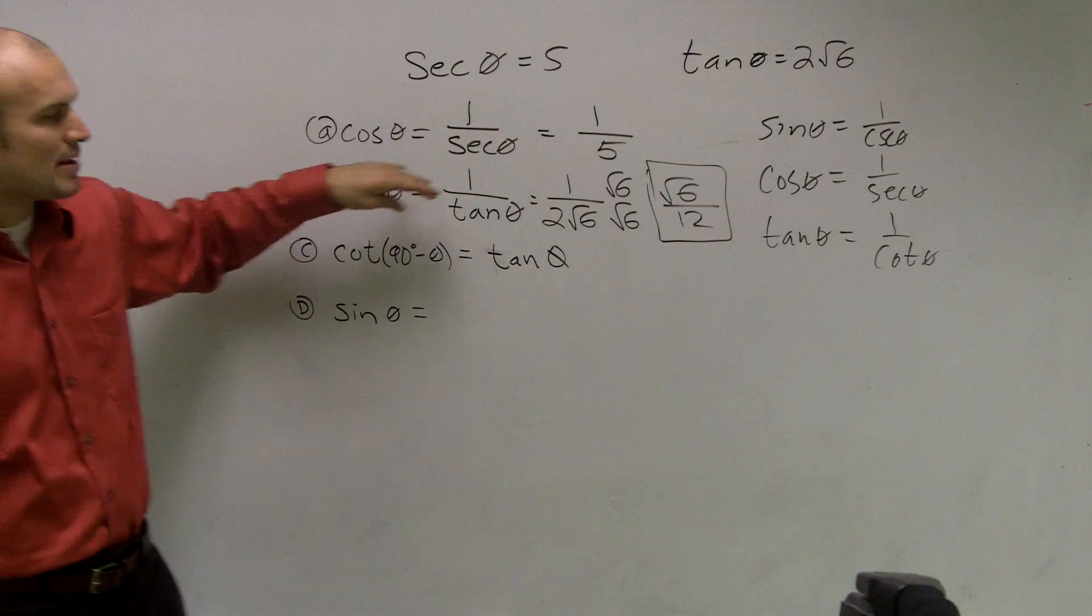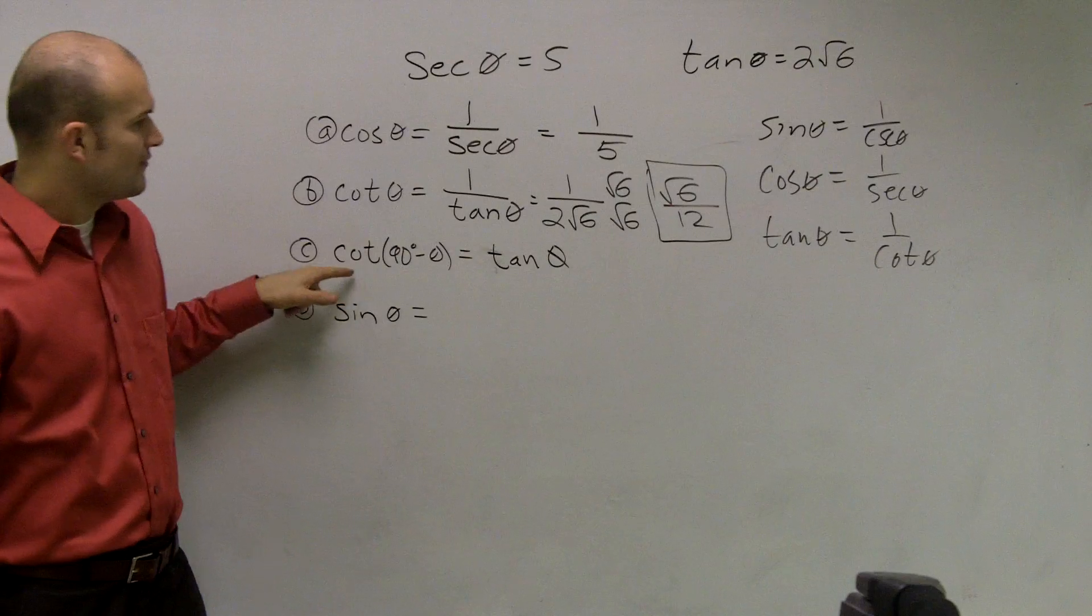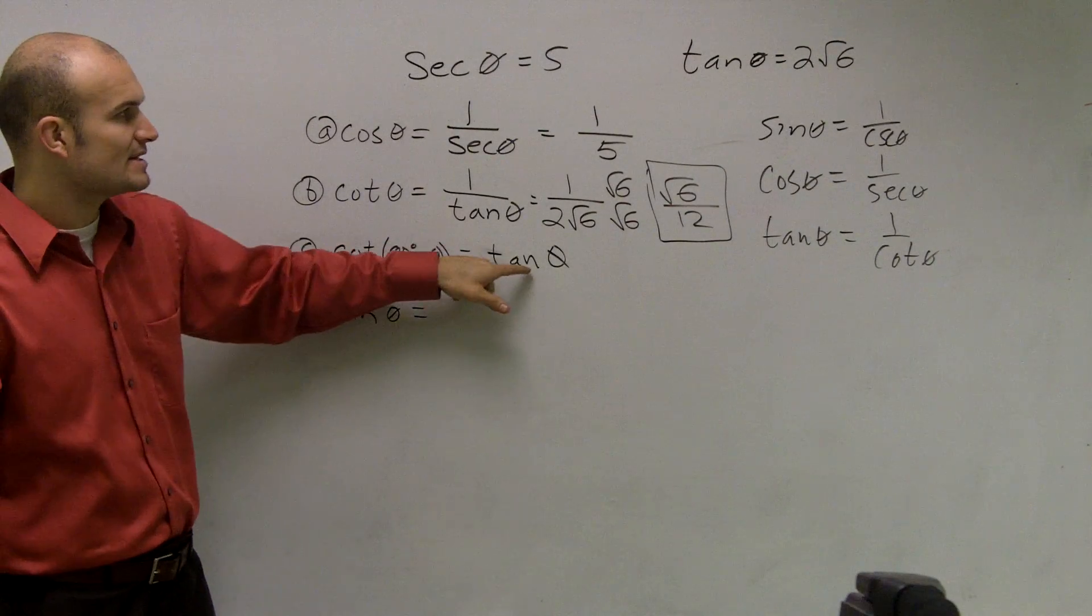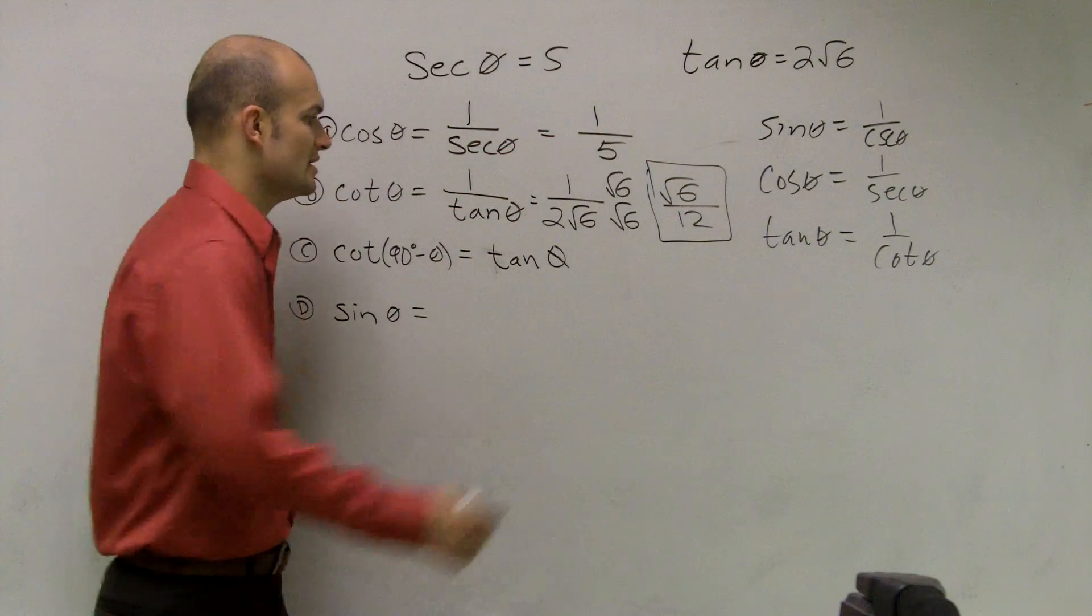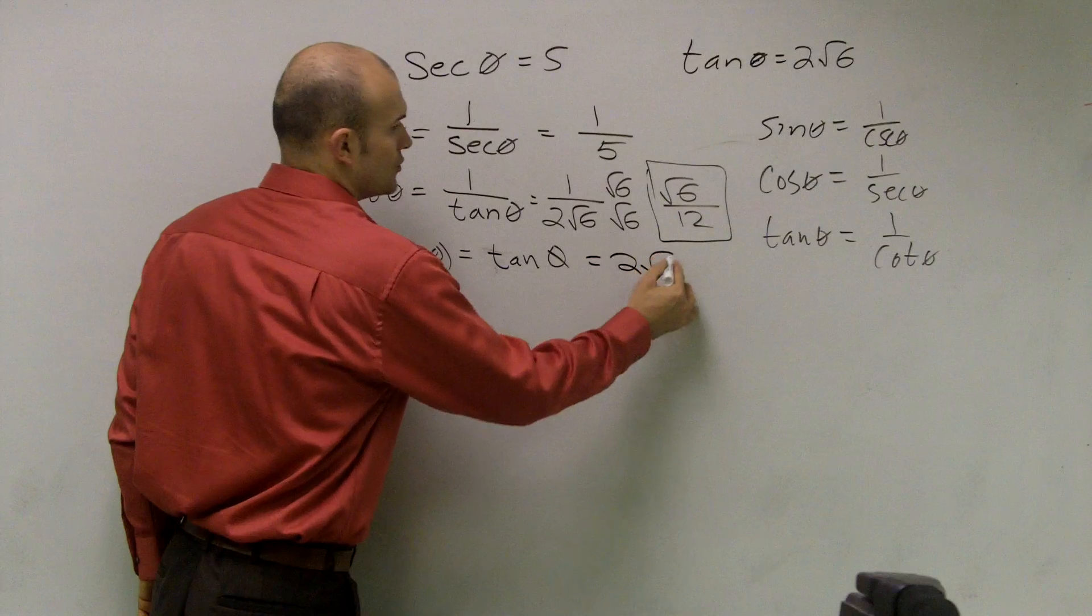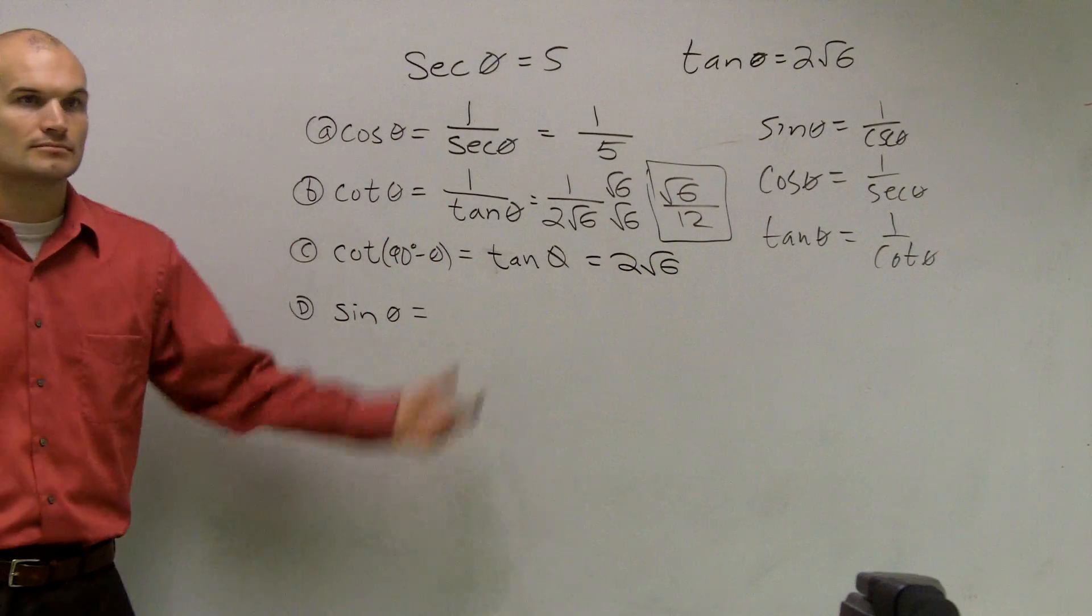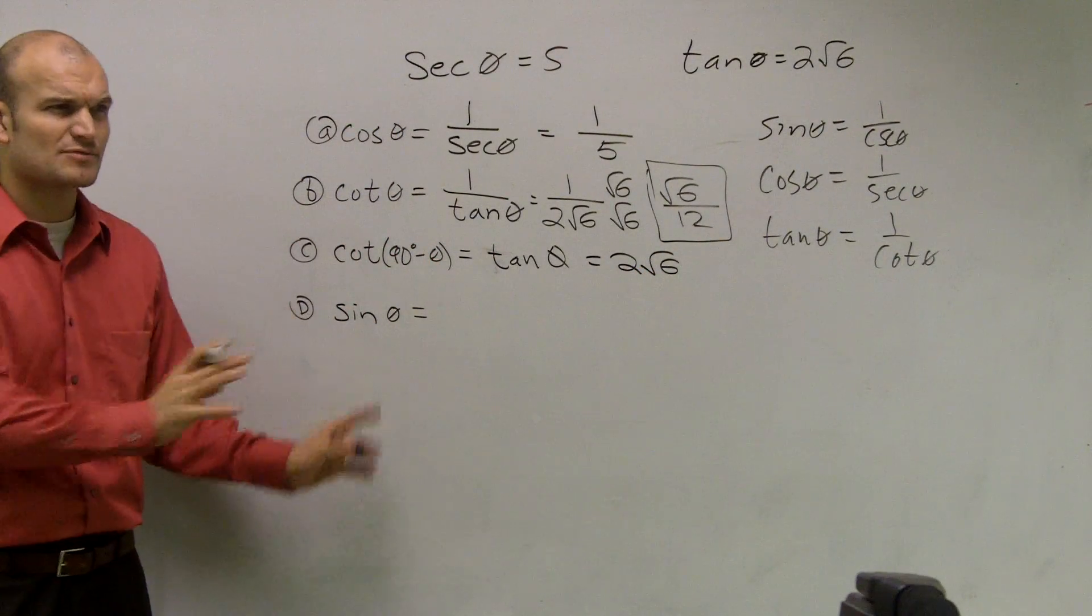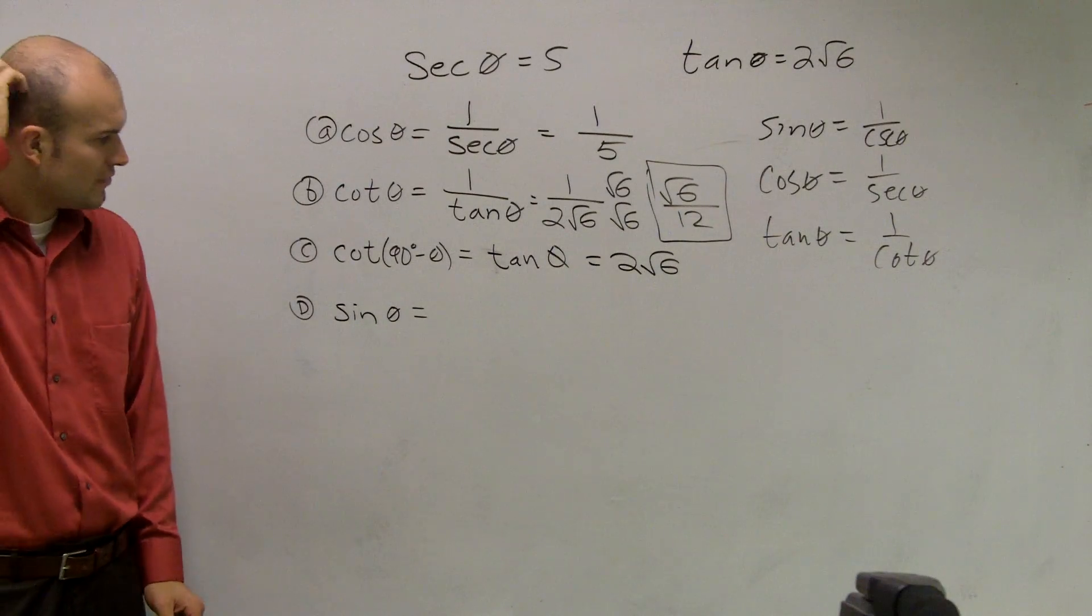And I'll prove that to you guys in just a second, not in this video but in the problem, because I haven't spoken with you about it. So therefore, cotangent of 90 minus theta is the same thing as tangent of theta. Well, tangent of theta is 2 radical 6. So there's our answer. And I'll show you guys why that works here in a different video for you.